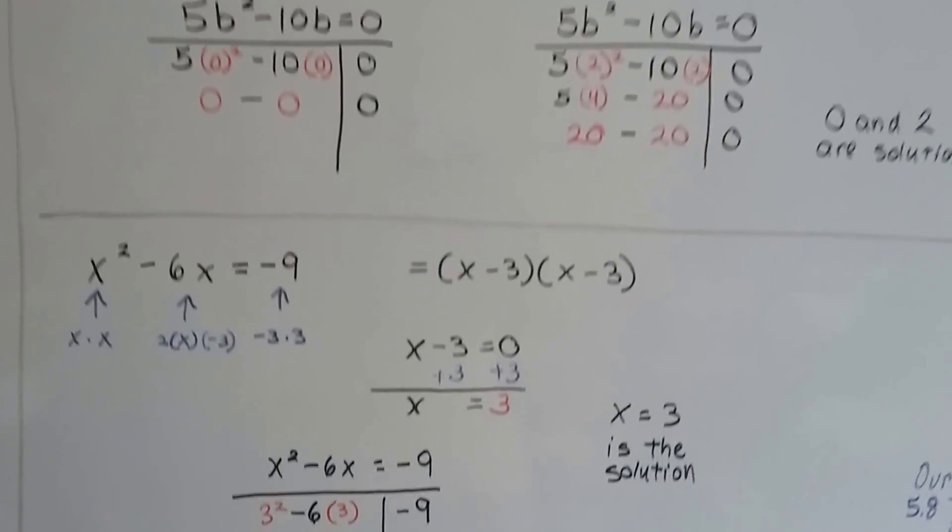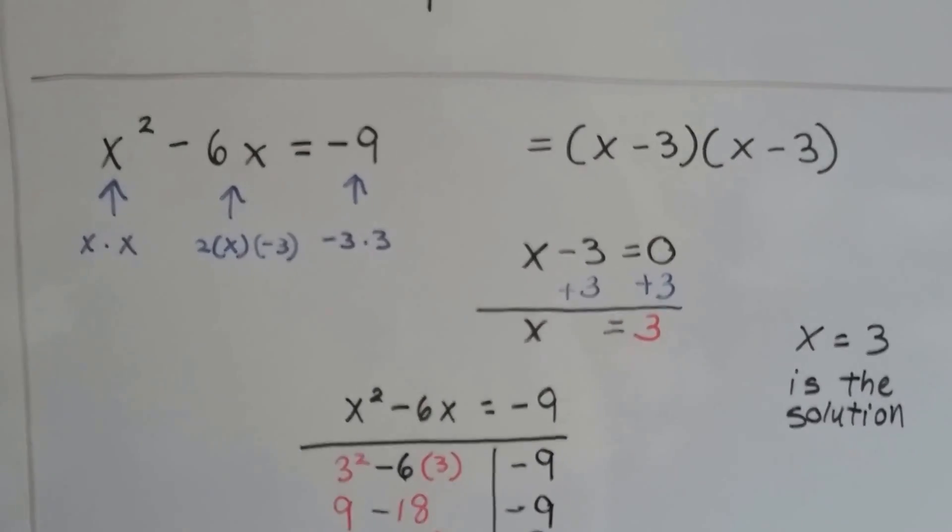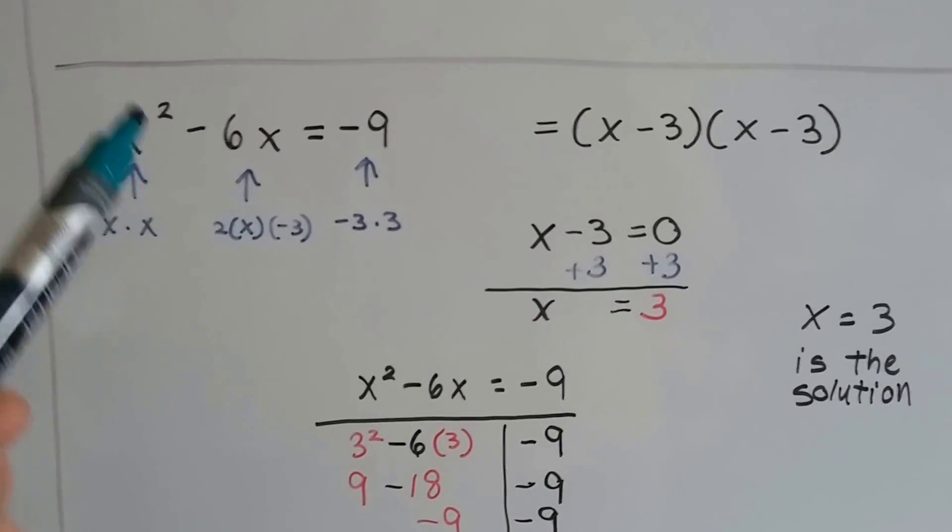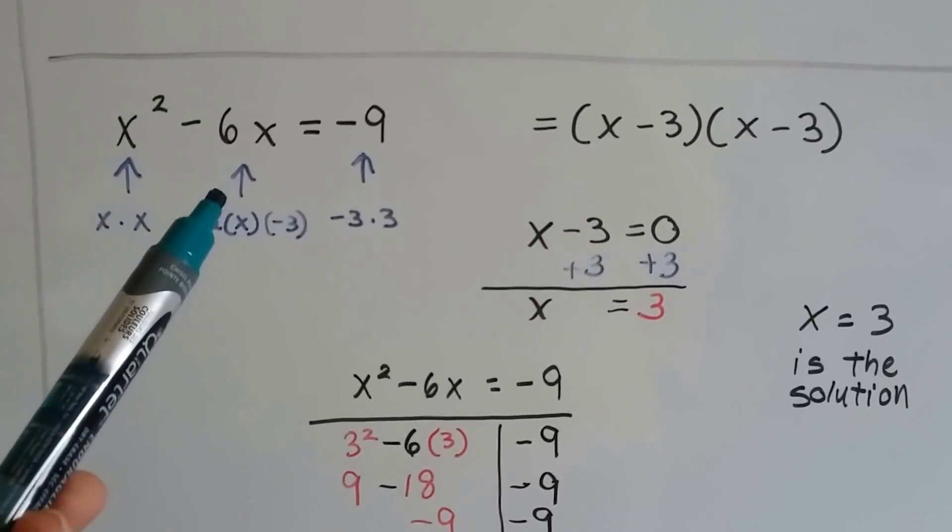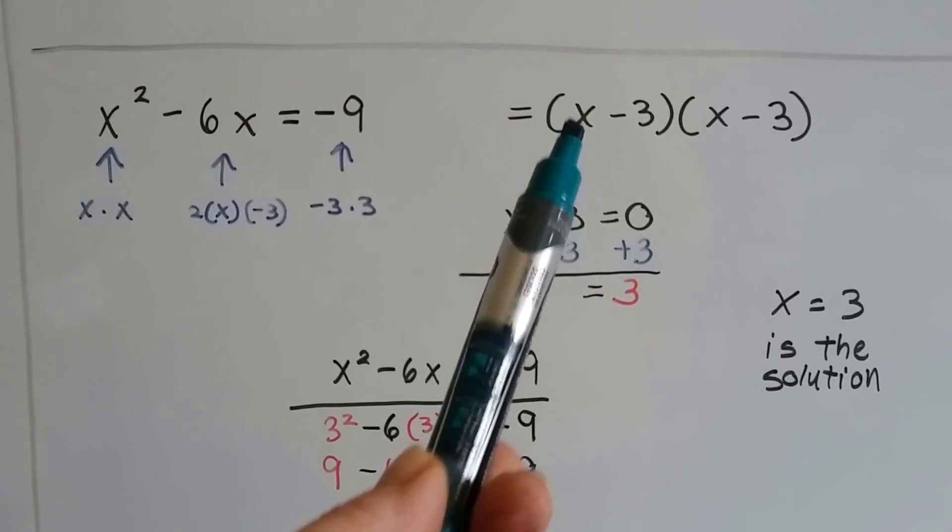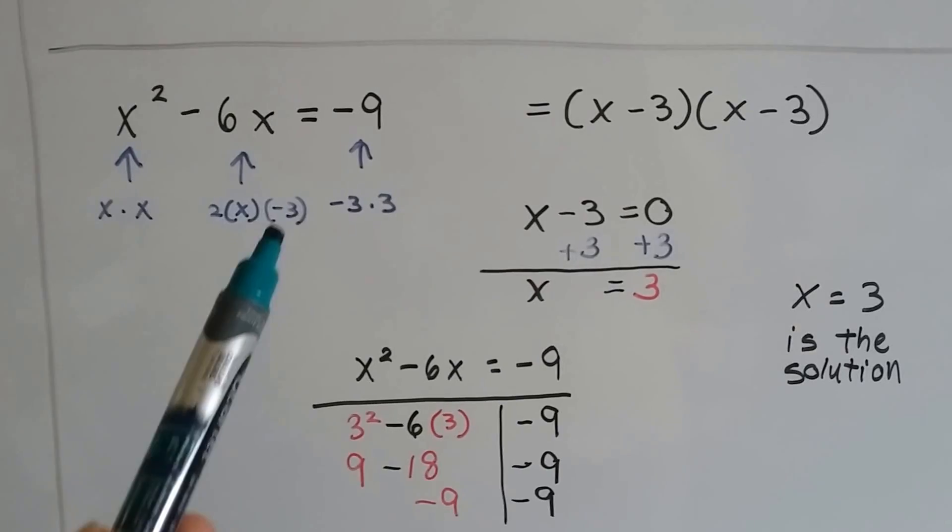Let's try this one. We've got x² - 6x = -9. Now that's a square, isn't it? So really, we've got x times x, and 2x times -3, and -3 times positive 3.